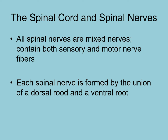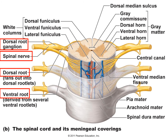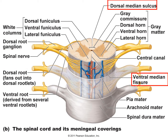All spinal nerves are mixed nerves, meaning they contain both sensory and motor nerve fibers. Each spinal nerve is formed by a dorsal root and a ventral root that combine together. The dorsal root has an enlarged area called the dorsal root ganglion, which is a group of cell bodies. To help with orientation, you have the ventral median fissure and the dorsal median sulcus to identify the proper orientation of the spinal cord.